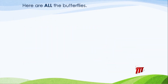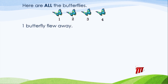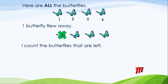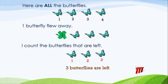Here are all the butterflies — one, two, three, four. One butterfly flew away — one. I count the butterflies that are left: one, two, three. Three butterflies are left. Four take away one equals three.